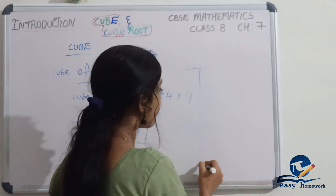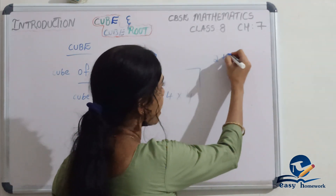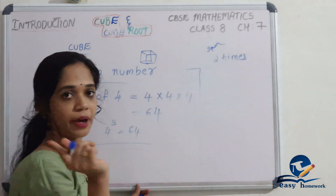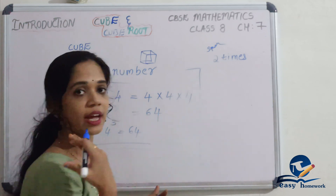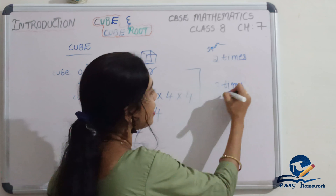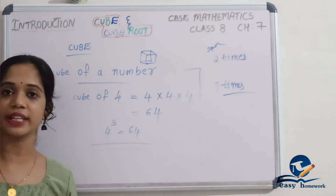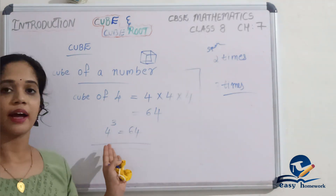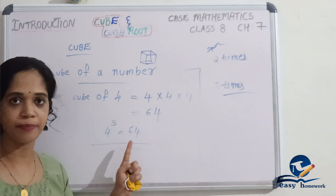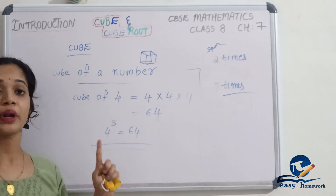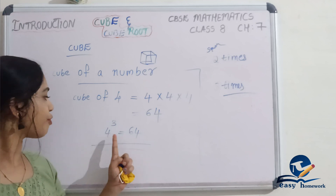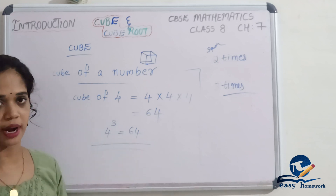Compare with square: square is 2 times the same number. Cube is 3 times the same number. So cube of 4 is 4 raised to 3. Examples: 1 raised to 3, 2 raised to 3. Here, 4 cubed = 64. That is 4. Clear?